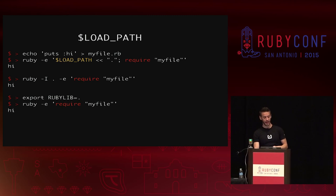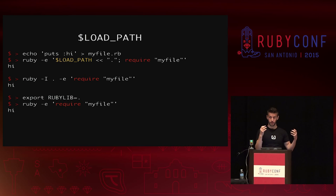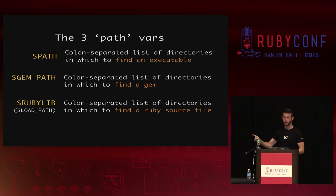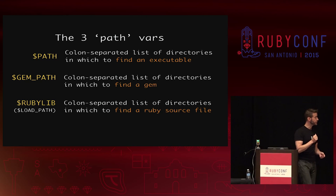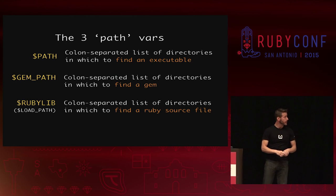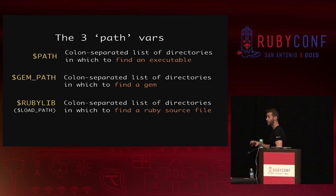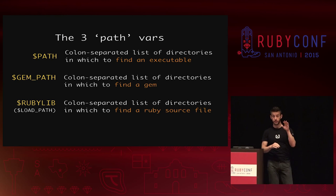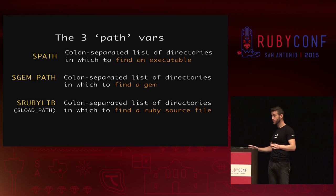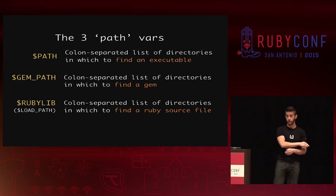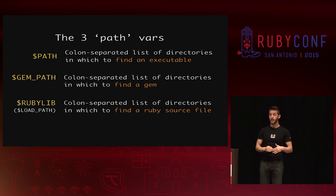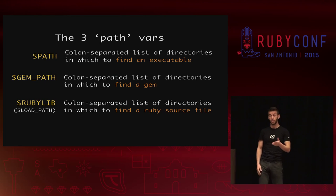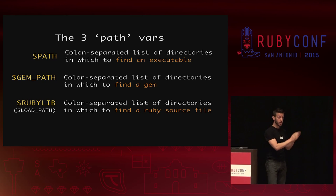So the three paths so far: PATH, GEM_PATH, and $LOAD_PATH. They all work the same — they're all editable by you, and they're each a colon-separated list of directories. If you get nothing else out of this talk: these paths are how things are found on your machine. If you're in a bind on a deadline, you can remove RubyGems and Bundler entirely, hand-edit these values, and your app will boot and work perfectly. You don't want to do that because it's brittle, but that's all you actually need.